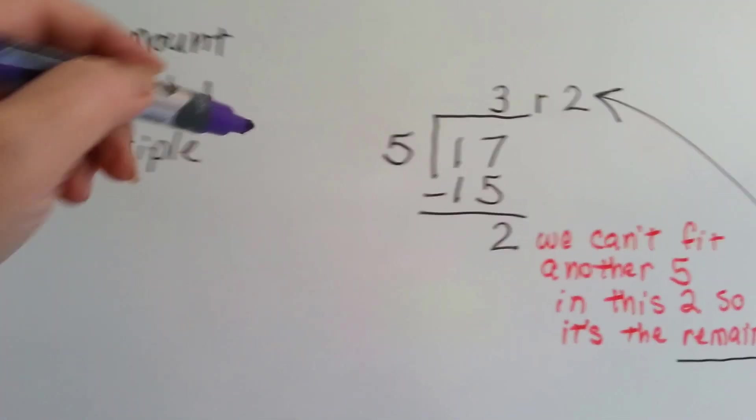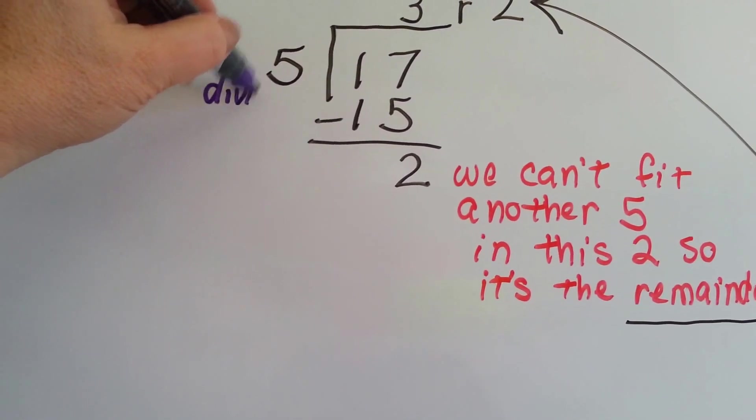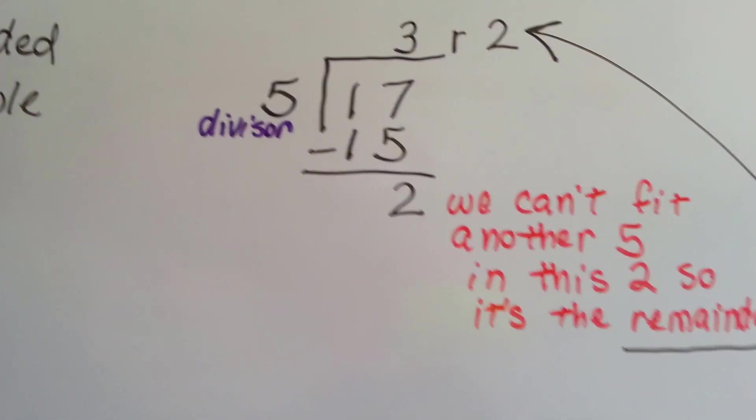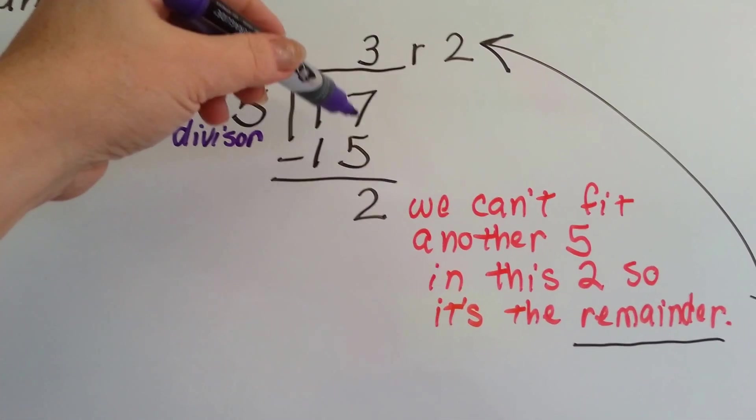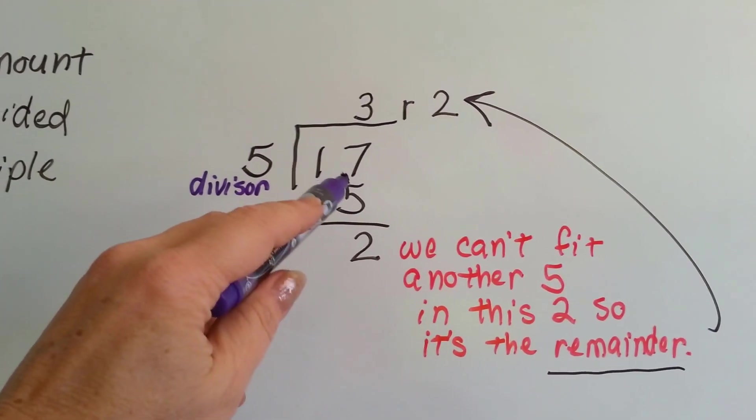This is the divisor, remember? And the 17 is the dividend. It's the number being divided.